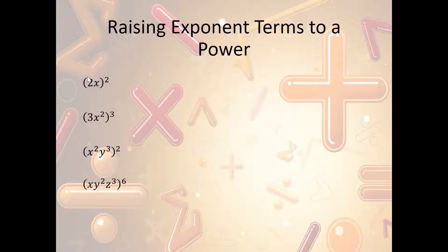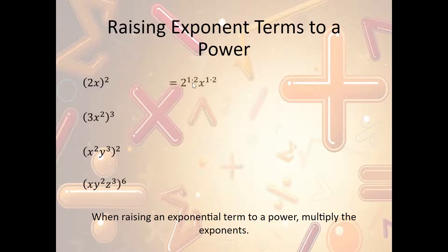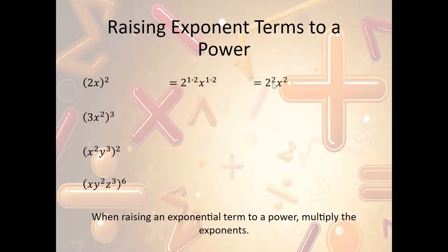What if we have the coefficient and variable inside parentheses and the power outside? We raise the power by multiplying the exponents. So for (2x)²: 2 is really 2 to the first, and x is x to the first. We multiply each by 2 — so 2¹ times 2 is 2², and x¹ times 2 is x². Well, 2 squared is 4, so we get 4x².